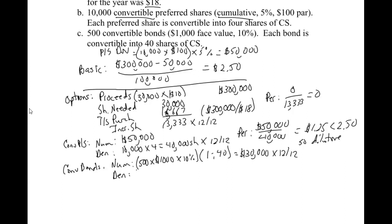It says each bond, we have 500 bonds, is converted into 40 shares. So that means we're going to have 20,000 shares. And we could also multiply that times 12 twelfths if we want. So let's do the per share down here just because I don't have room off to the side.